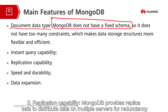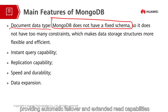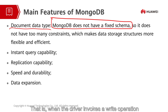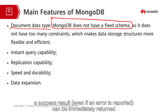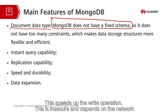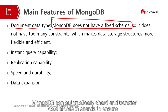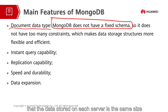Thirdly, replication capability: MongoDB provides replica sets to distribute data on multiple servers for redundancy, providing automatic failover and extended read capabilities. Fourthly, speed and durability: the MongoDB driver implements a write semantic called fire and forget — when the driver invokes a write operation, a success result can be immediately returned even if an error is reported. This speeds up the write operation, though it is less secure and depends on the network. Fifthly, data expansion: MongoDB uses sharding technology to expand data. MongoDB can automatically shard and transfer data blocks in shards to ensure that the data stored on each server is the same size.